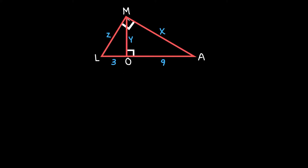So as you can see there's an altitude that's drawn through the big right triangle. An altitude is just a straight line that goes from one vertex to the opposite side and it hits that opposite side at a 90 degree angle. So when you draw an altitude it creates three similar triangles — the original big triangle, this medium-sized right triangle, and this small one on the left.